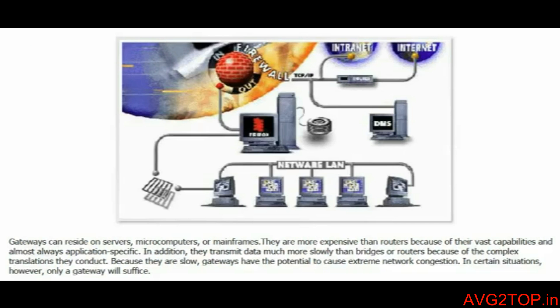Gateways can reside on servers, microcomputers, or mainframe computers. They are more expensive than routers because of their vast capability and application-specific nature — costlier than routers or bridges. However, data transmission between two different networks is slower than bridges or routers because complex transactions are happening simultaneously. Gateways also have the potential to cause network congestion when various activities occur at the same time.